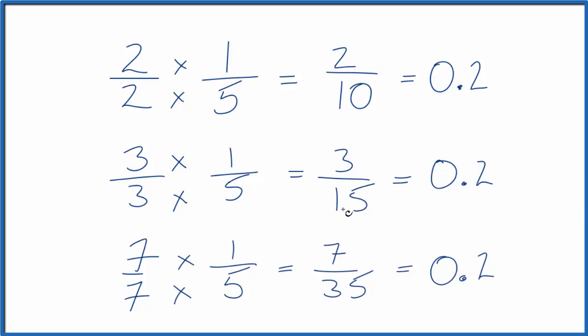So seven over seven, that's another equivalent fraction to one-fifth, and all of these are equal to the same value, zero point two.